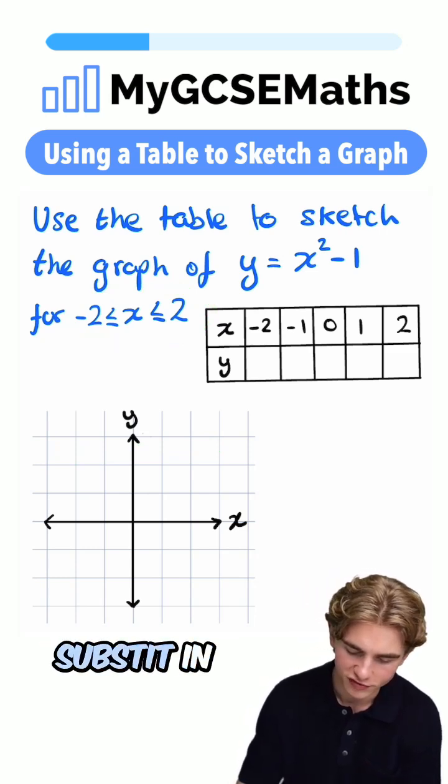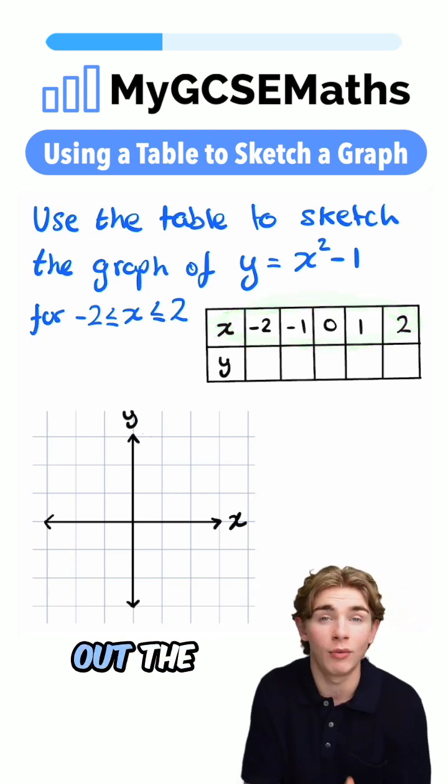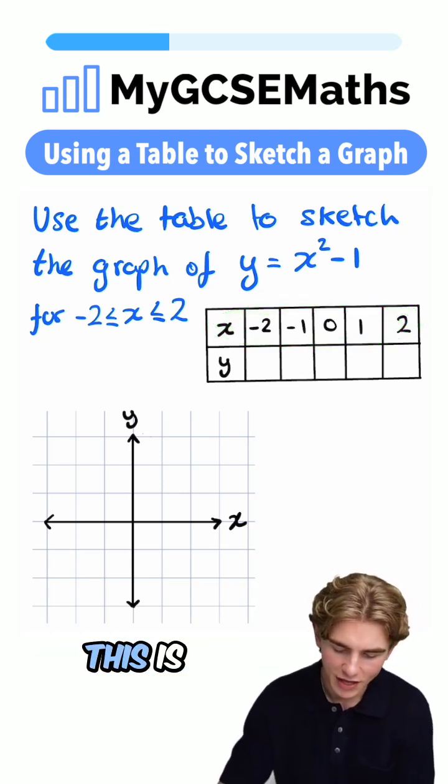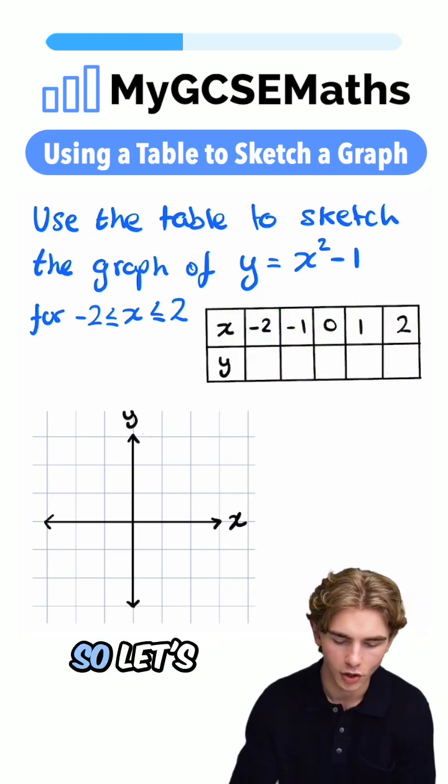So how are we going to do it? We're going to substitute in our different values of x given in the table to work out the corresponding value of y. This is going to give us a series of coordinates. We can plot those on and join them up. Let's get that done.